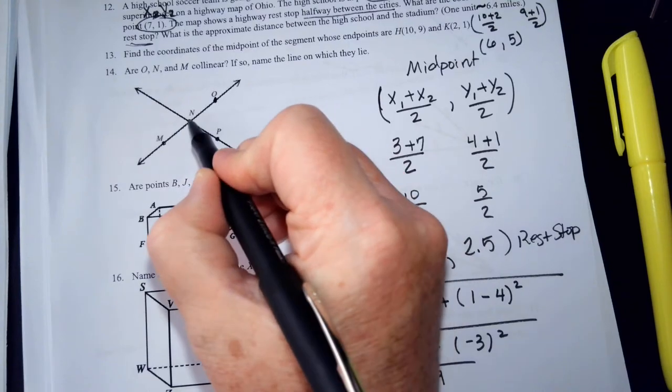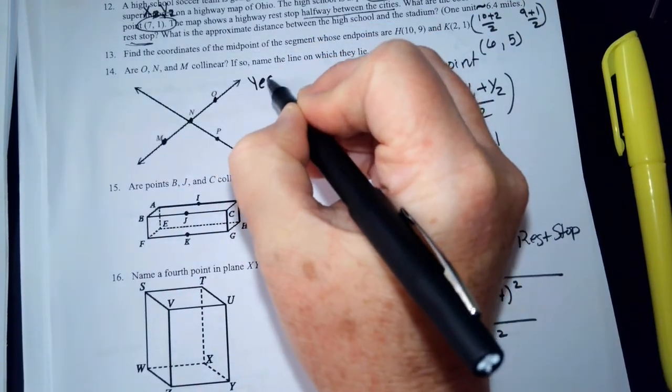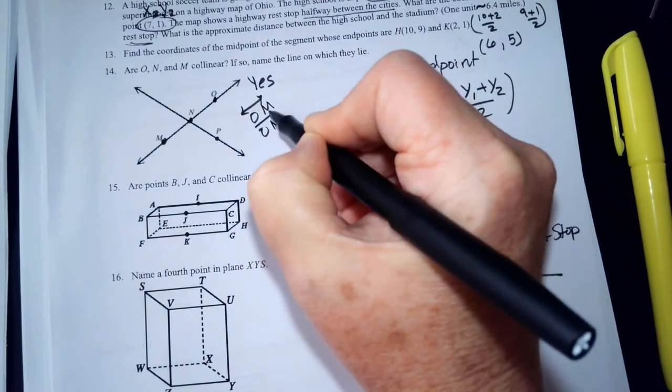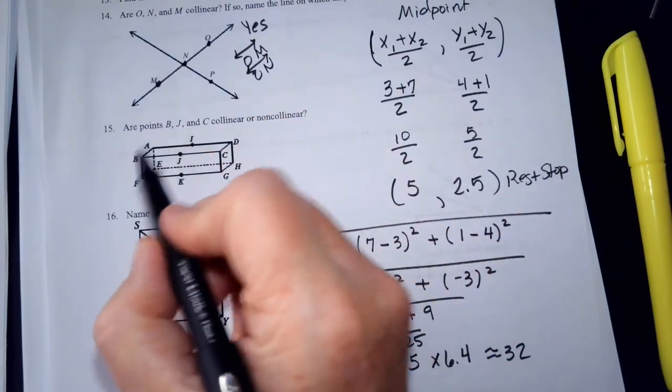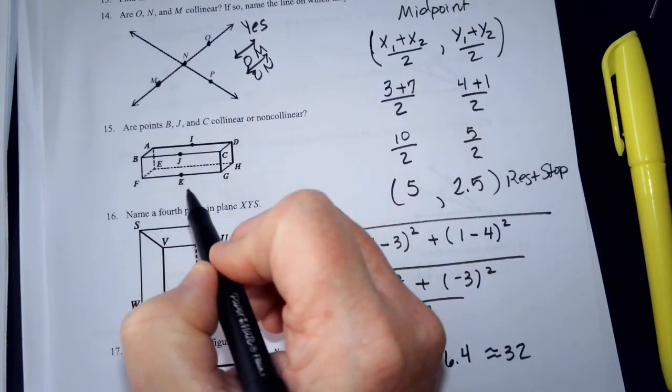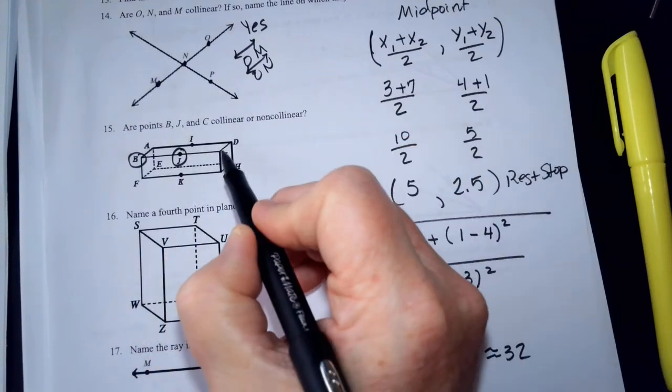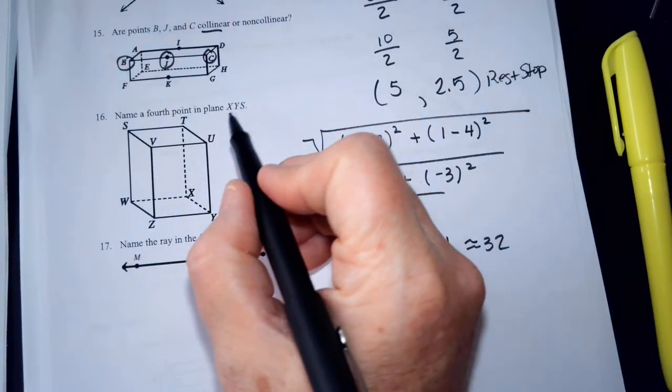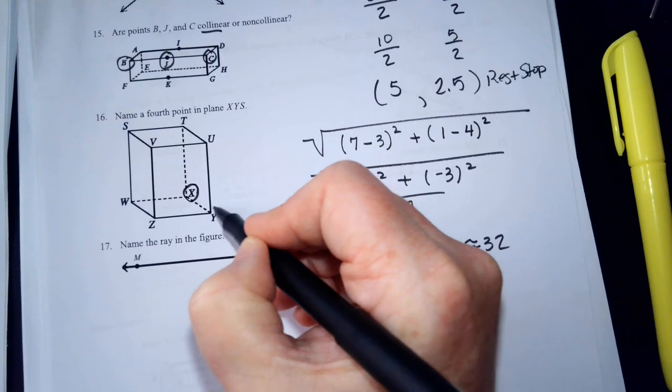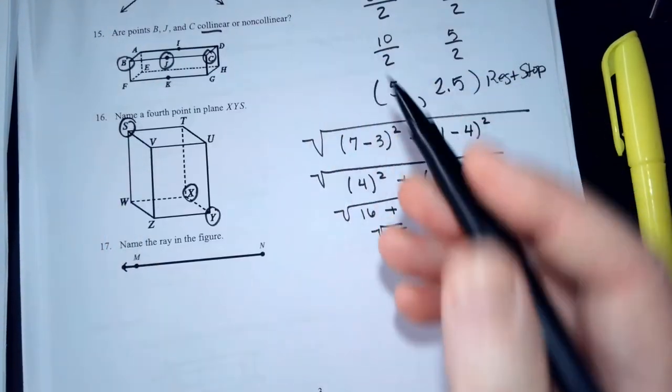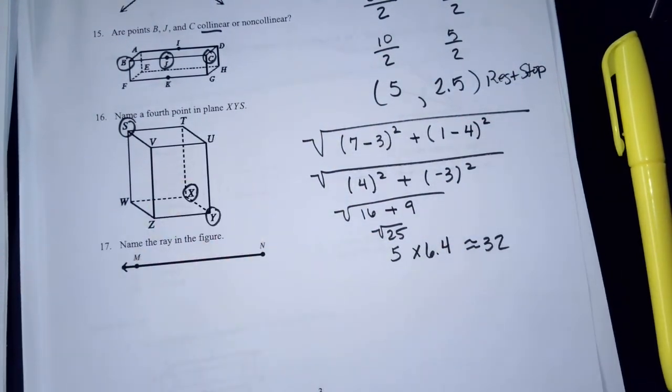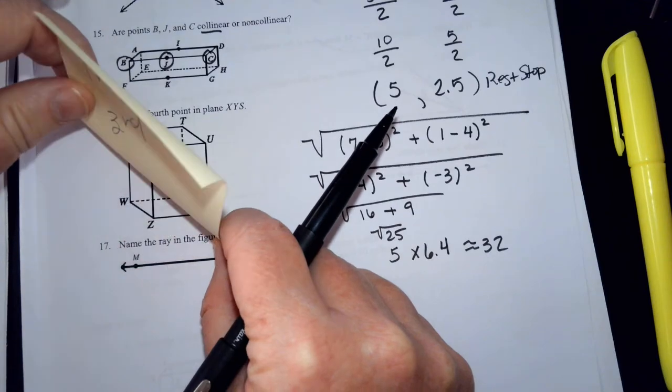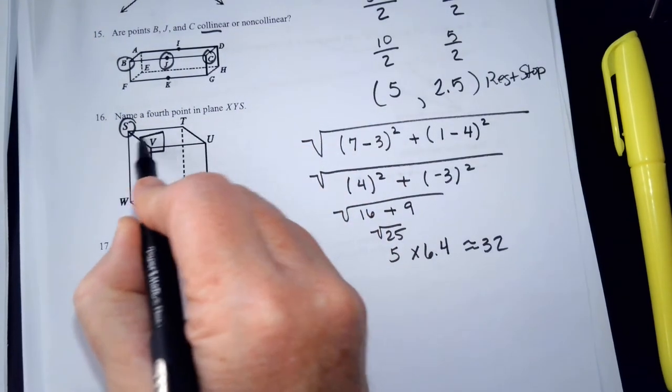Are O, N, and M collinear? Yes. Name the line. M, O. O, M. O, N. It doesn't matter. Are points B, J, and C collinear or non-collinear? Collinear. Name the fourth point in the plane X, Y, S. It is a diagonal slid in from the bottom. Something like this. Like if you cut it, sliced it that way. So, that answer is V.